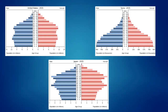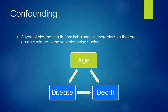Population pyramids for the U.S., Syria, and Japan illustrate very different age distributions across countries. When thinking about disease and disease rates, you would certainly want to consider age when comparing these three countries, because age can be a potential confounder — it's related to both disease and the risk of death. We would want to adjust for age when comparing populations where we know the age distribution differs.